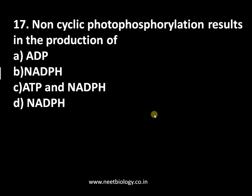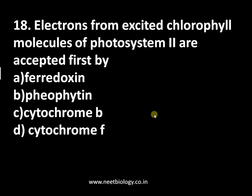Question number seventeen: non-cyclic photophosphorylation results in the production of — option A: ATP, option B: NADPH, option C: ATP and NADPH, option D: NADPH only. The answer is ATP and NADPH. ATP is synthesized in cyclic photophosphorylation, which is predominant in bacteria, whereas non-cyclic photophosphorylation is predominant in higher plants and produces both ATP and NADPH.